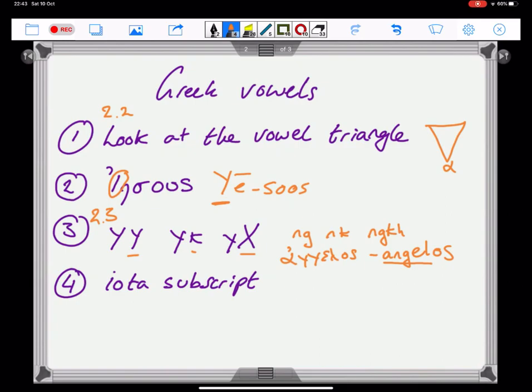Under 2.4, he then gives you the opening of John. One of the important points he raises there is the iota subscript. This is a Byzantine convention, as I wrote in my previous notes. You'll find an adscript in some texts.